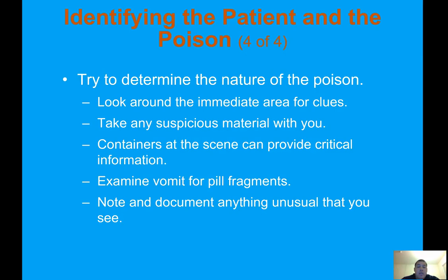Try to determine the nature of the poison. Look around the immediate area for clues and take any suspicious material with you. Containers at the scene can provide critical information. Examine vomit for pill fragments and note and document anything unusual. If you find containers at the scene, always take them — pill bottles, liquids, anything the patient may have ingested — for the doctor to see. Poison control is also a good resource to call if you're unsure what substance the patient took.